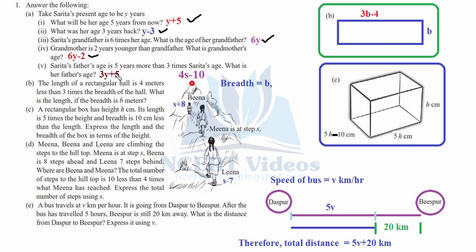Part b: the length of a rectangular hall is 4 meters less than 3 times the breadth of the hall. What is the length if the breadth is b meters? We have to find the length in terms of breadth. First calculate 3 times breadth, which is 3b, and then subtract 4 from it — therefore the length is 3b minus 4.